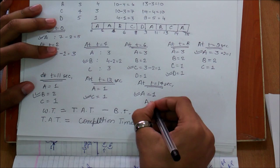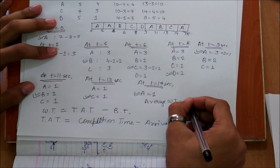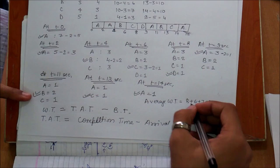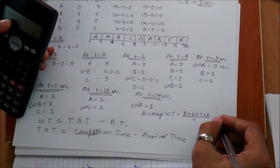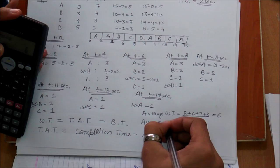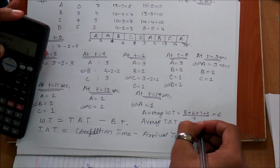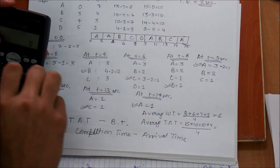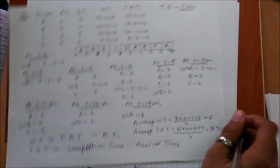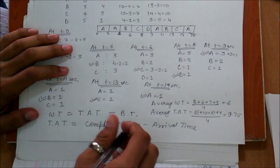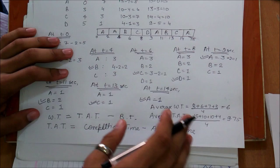Now we calculate the average waiting time by adding all waiting time values and dividing by the total number of processes, which comes out to be 6. We also calculate the average turnaround time by adding all turnaround times divided by the total number of processes, which comes out to be 9.75. This completes the round-robin CPU scheduling algorithm. It has complete fairness, as each process gets equal time to execute, and there is no starvation in this scheduling algorithm.